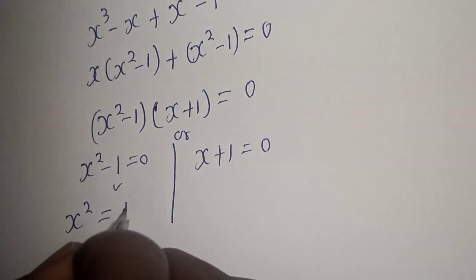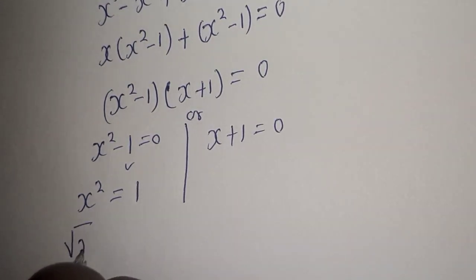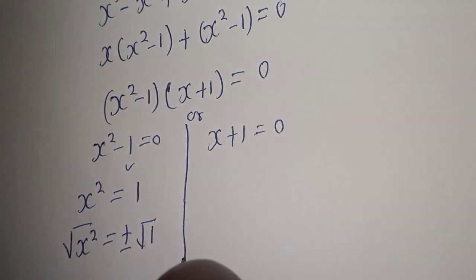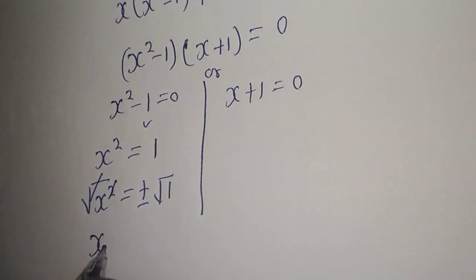s square is equal to 1. Let's take the square root of both sides. Square root of s square is equal to plus or minus square root of 1. This will cancel this. s will be equal to square root of 1 is plus or minus 1.